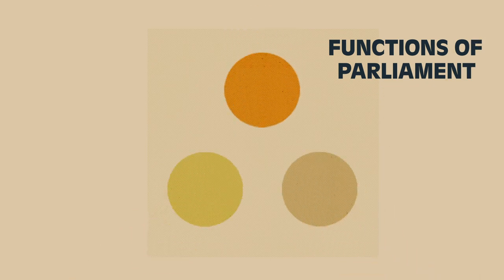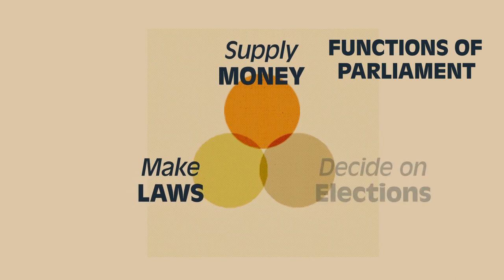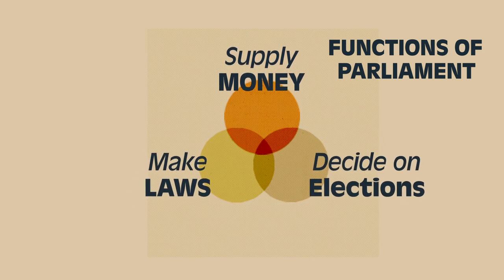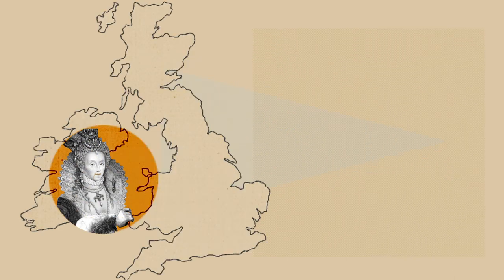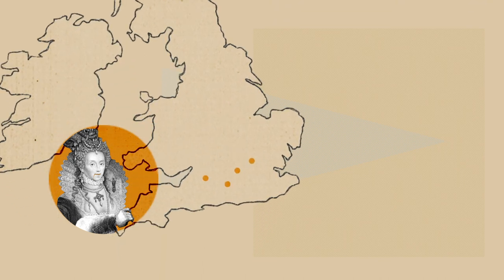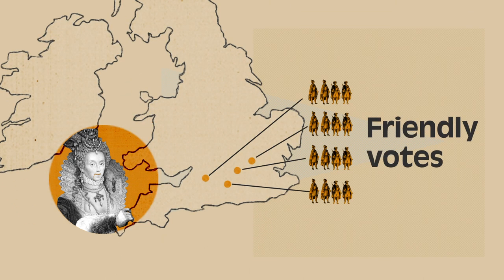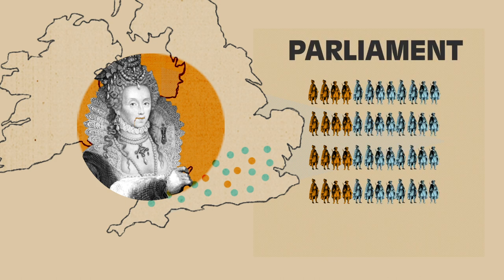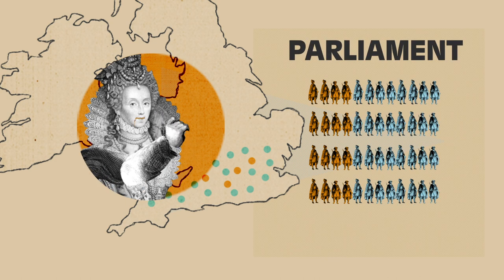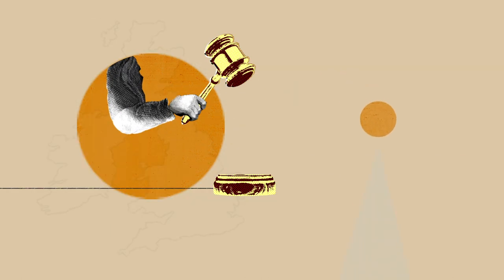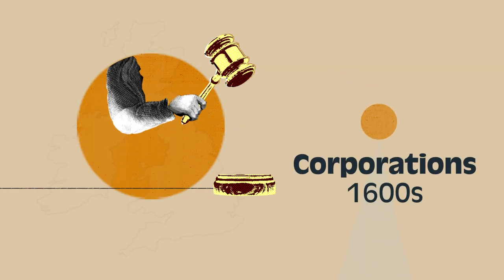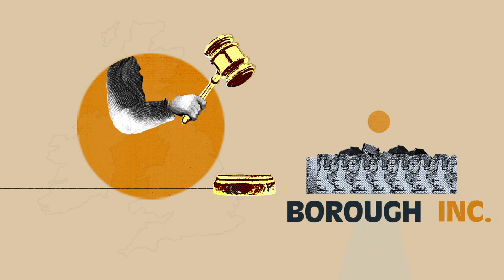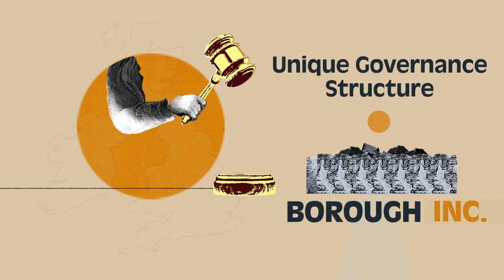The three functions of Parliament remain: to supply government with money, to make laws, and to decide when a new Parliament is needed. Before calling Parliament, some monarchs would create boroughs to increase friendly votes. Other boroughs sent members to Parliament, which monarchs in the House of Commons disputed. With the legal development of corporations, boroughs could incorporate with their own unique governance structures.